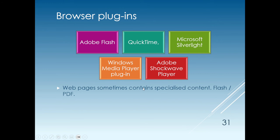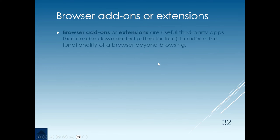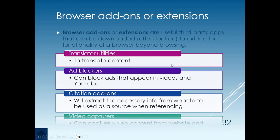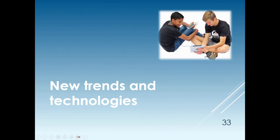Another term that always comes up is browser plugins. Web pages sometimes contain specialized content that needs a plugin — a little piece of software installed into your browser that adds to its capability. Increasingly, browsers have the capacity to display specialized content without plugins because it's built into newer browsers. There are also browser add-ons or extensions, which are third-party apps downloaded to extend functionality beyond browsing — such as translators, ad blockers, citation add-ons, and video capturers.